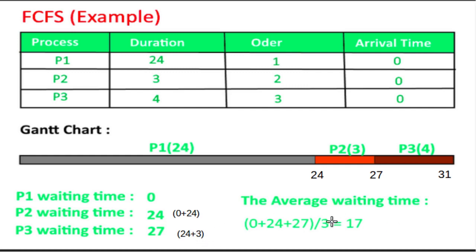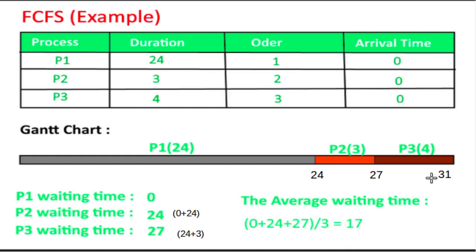P3's waiting time is 0 plus 24 plus 3, and the average waiting time is 27 divided by 3 equals 17. The turnaround times are 24, 27, and 31 for P1, P2, and P3 respectively.